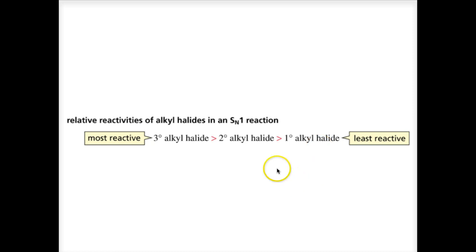If you think about the mechanism of SN1, we know that a carbocation is formed because the tertiary alkyl halide will easily form a tertiary carbocation, which is more reactive than a secondary carbocation. So you can understand easily from the mechanism why these relative reactivities are as they are.